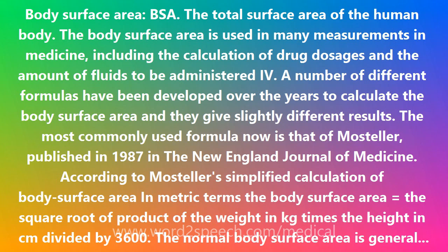Body surface area is used for determining other medical measures. Renal function is measured by the glomerular filtration rate, or GFR, which is calculated in regard to the body surface area. The cardiac index is a measure of cardiac output divided by the body surface area, giving a better approximation of the required cardiac output. Chemotherapy and pharmacotherapies are often dosed according to the patient's body surface area. Glucocorticoid dosing is also expressed in terms of body surface area for calculating maintenance doses or to compare high-dose use with maintenance requirement.